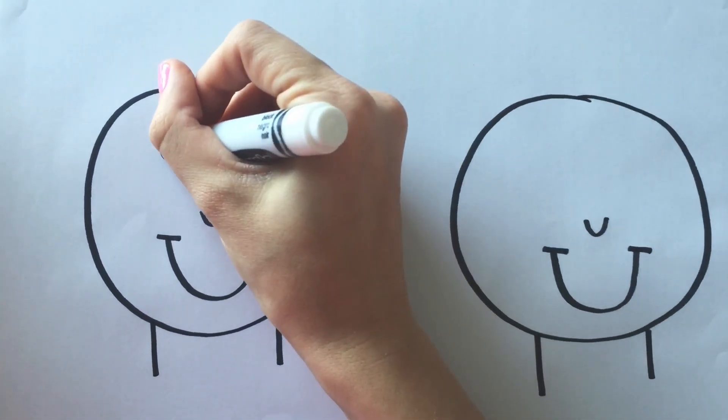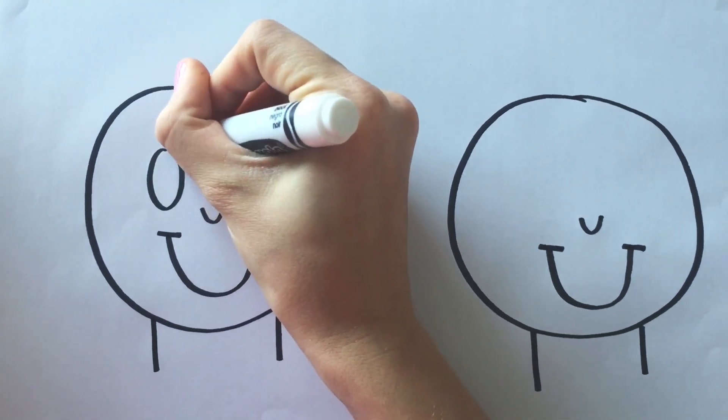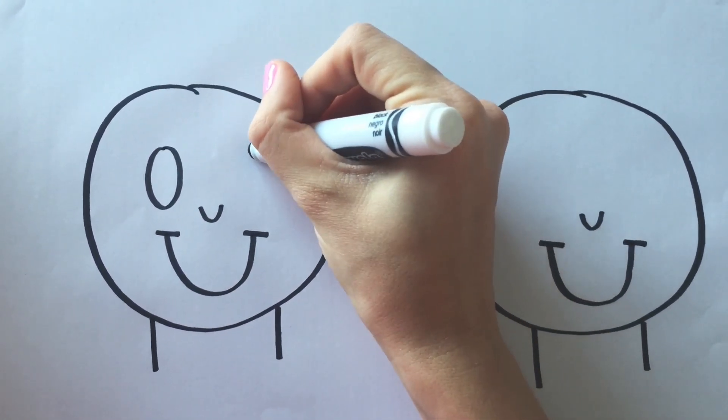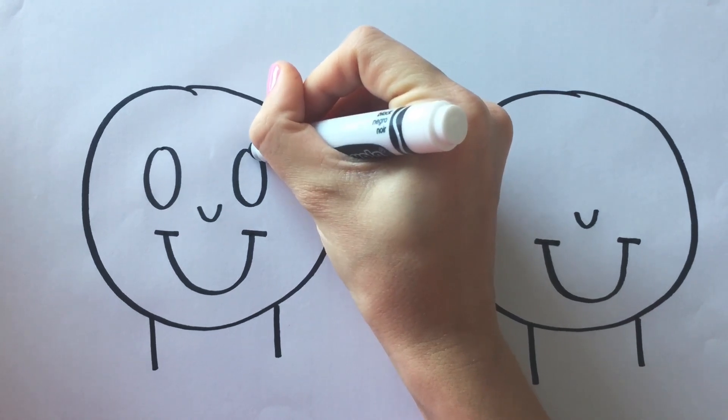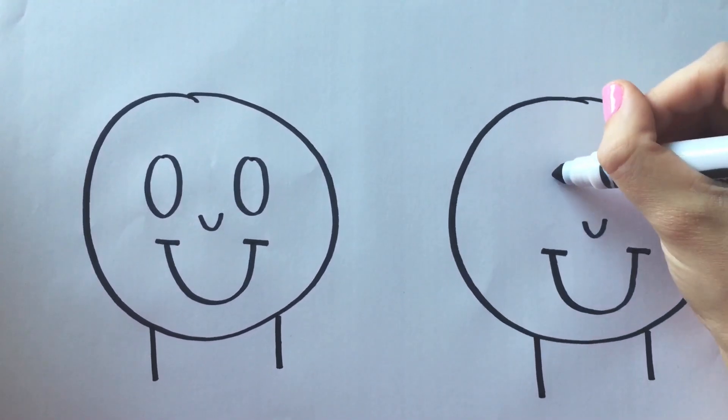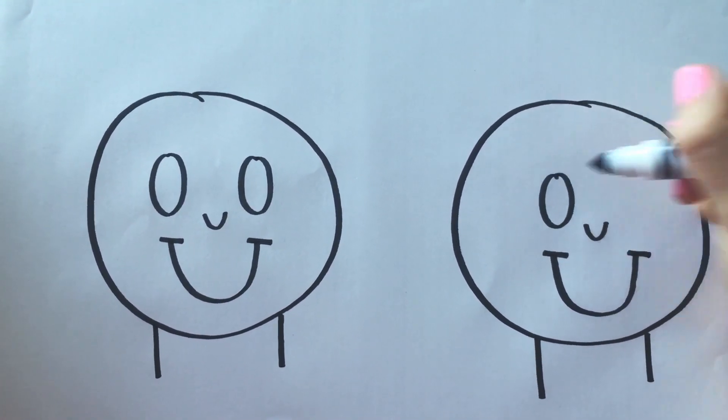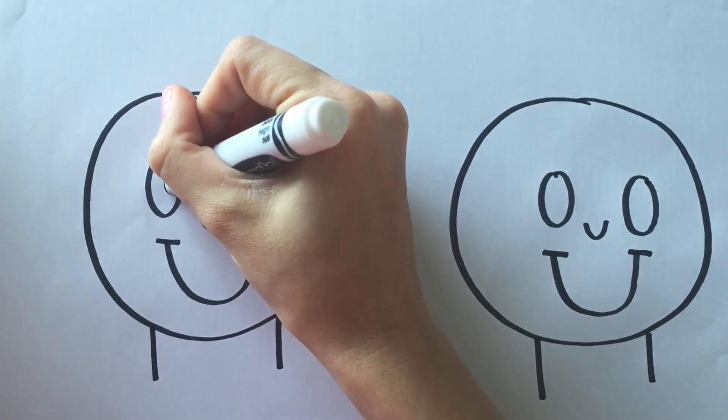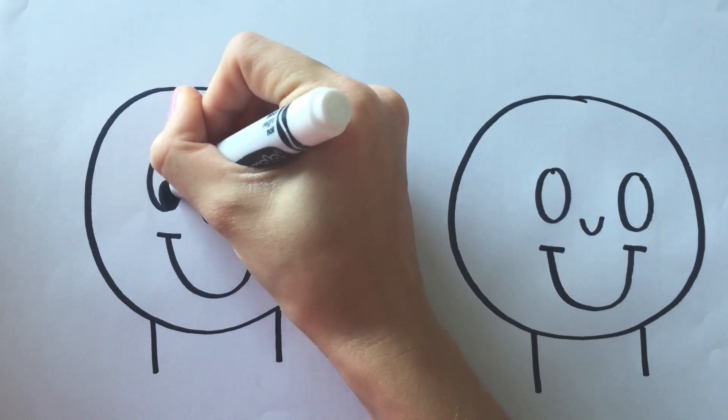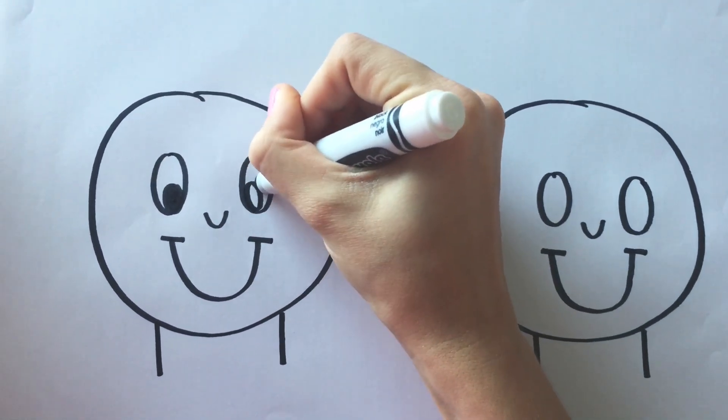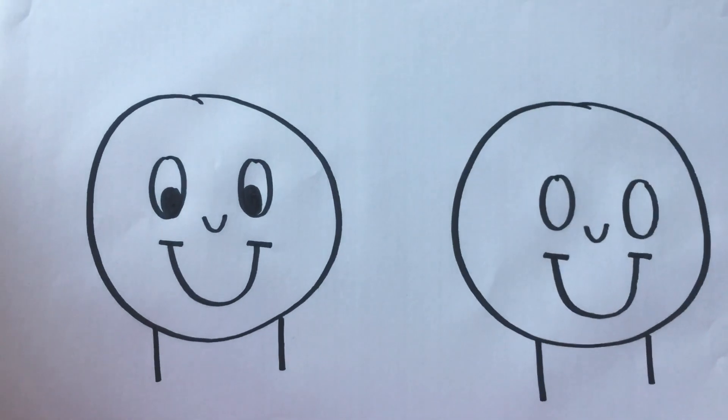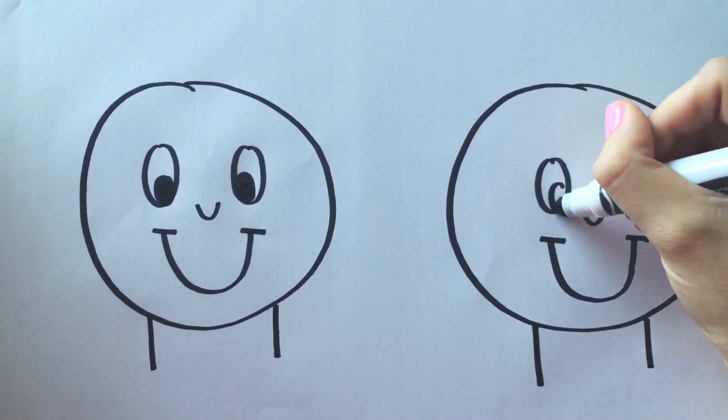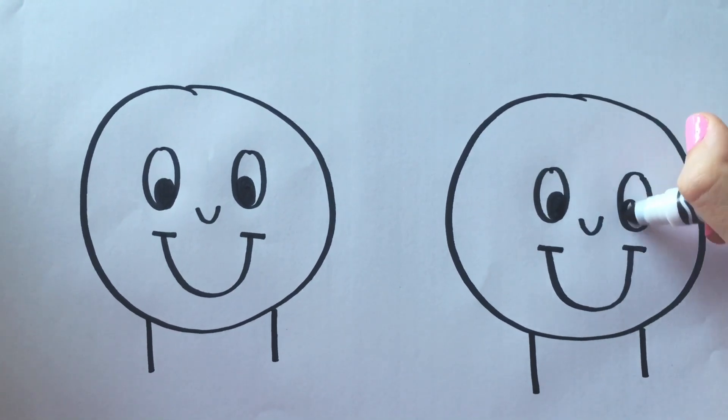Next, we're going to draw an oval. And another oval. And do the same on the other face. And then we're going to do another mini oval inside. And colour that in. And there you have eyes.